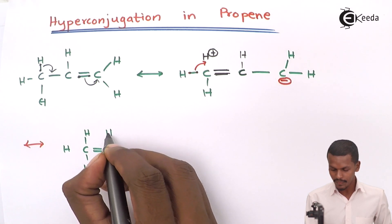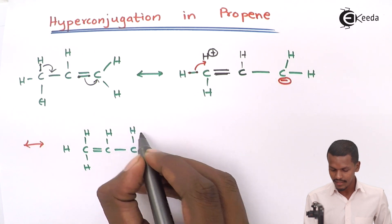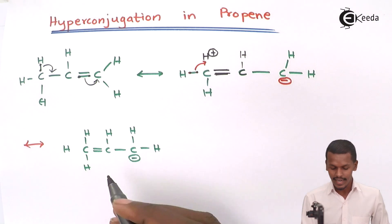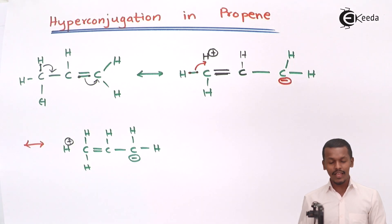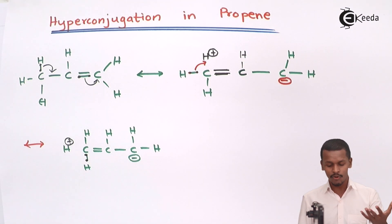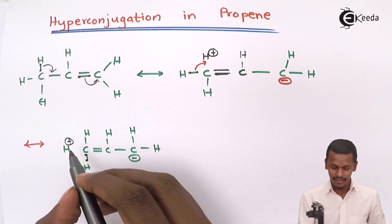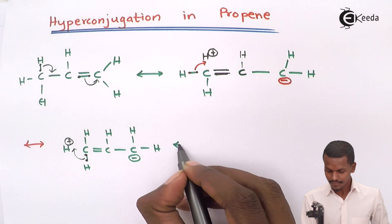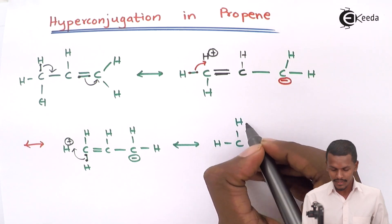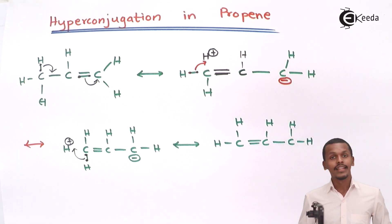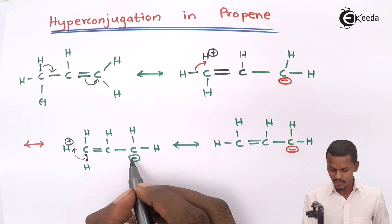It will be H-C-H with a double bond, and the rest remains as it is. The other hydrogen will have a negative charge, while this hydrogen that shifted its electron acquires a positive charge. To stabilize that also, the sigma electrons between carbon and hydrogen are delocalized, and the C-H bond reforms, giving the structure: H-C with the same arrangement and a negative charge as mentioned.